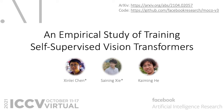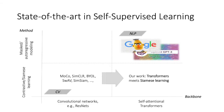Hello everyone. We present an empirical study of training in self-supervised vision transformers. This work is jointly done by Xing Lei, Sai Ning, and Kai Bin from FAIR. Self-supervised learning is a promising learning paradigm and is of central importance across many different domains in AI because of its ability to avoid the cost of annotating large-scale datasets.